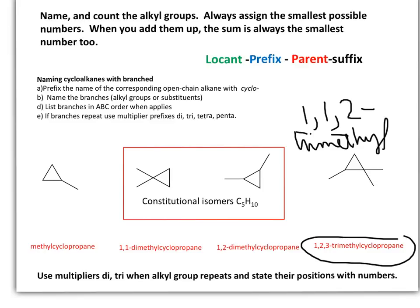We have one extra case to explore. This one also has three substituents, but here each one of the carbons is attached to one methyl group, making it 1,2,3-trimethylcyclopropane.